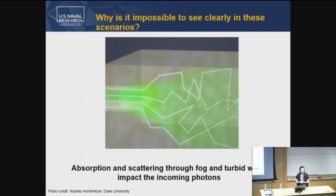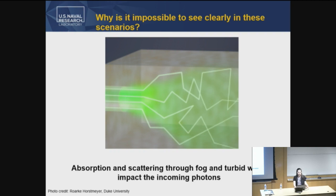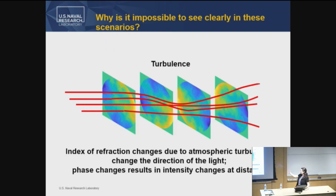So why is it impossible to see clearly in these scenarios? For fog and turbid water, the absorption and scattering of light impacts the incoming photons. I'm going to talk about active imaging where we're illuminating our target with a laser. Absorption absorbs that light; scattering sends it in other directions, affecting our ability to get light to the target and back. In the case of turbulence, the index of refraction changes due to turbulence and changes the direction of that light — phase changes result in intensity changes with distance, which is called scintillation.